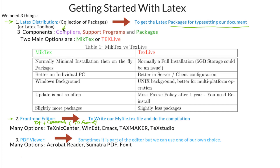The distribution has three components. The first is the compiler, which understands these commands and understands what formatting we want. Some examples of compilers are PDFTeX — it converts our file, which is a text document with an extension of .tex, into a PDF. We input this file into the compiler and we get a PDF out of it, so therefore it is called PDFTeX.